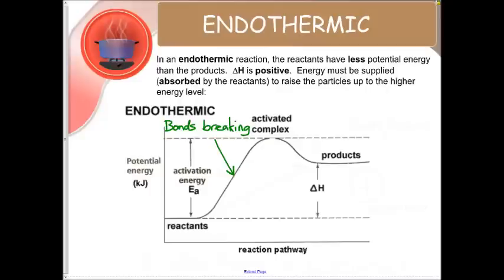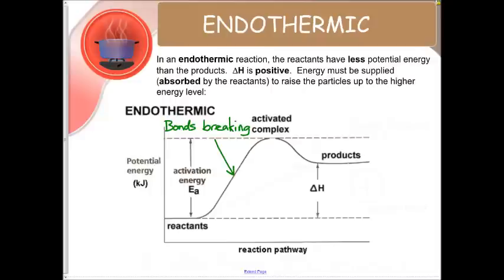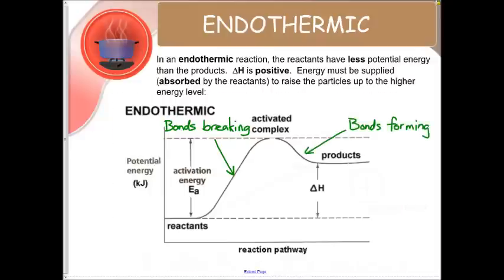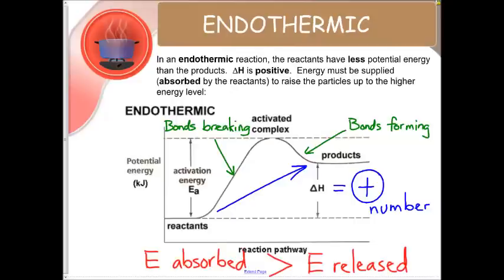That will get us to the top here with our activated complex. Our activated complex is now ready to form new bonds to create the products. Now the products that are made have kept a lot of that energy, so our overall reaction is positive. It goes up. So our change in H is going to be a positive number. All of these things mean that we started with a low level of potential energy, we had a larger amount of activation energy, and then our products kept a lot of that energy in the bonds that they formed. So we didn't lose a lot of heat or energy as we made our products. So energy that was absorbed is greater than the energy that was released.